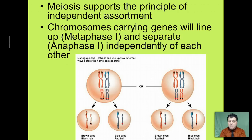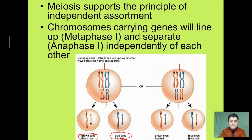Meiosis supports this principle. When the chromosomes carrying those genes show up on the equatorial plane, because they're aligning independently of each other, we can get very unique combinations in the offspring. For example, we can get a combination where we're passing on brown eyes and black hair, or blue eyes and red hair, or brown eyes and red hair, and blue eyes with black hair — it just depends on how those alleles align during metaphase and then separate during anaphase.